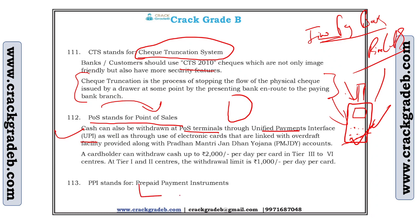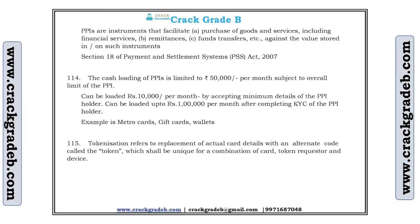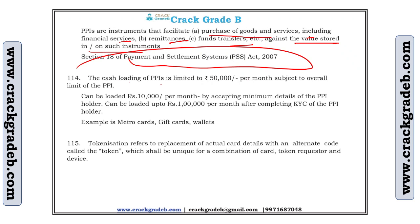PPI stands for Prepaid Payment Instrument. For example, a Flipkart or Amazon voucher of 1,000 rupees is a PPI. It is an instrument that facilitates purchase of goods and services including financial services, remittance, and fund transfer against value stored on such instruments. Regulation is under the Payment and Settlement Systems Act. Cash loading of PPI is limited to 50,000 rupees per month, subject to the overall limit of the PPI.